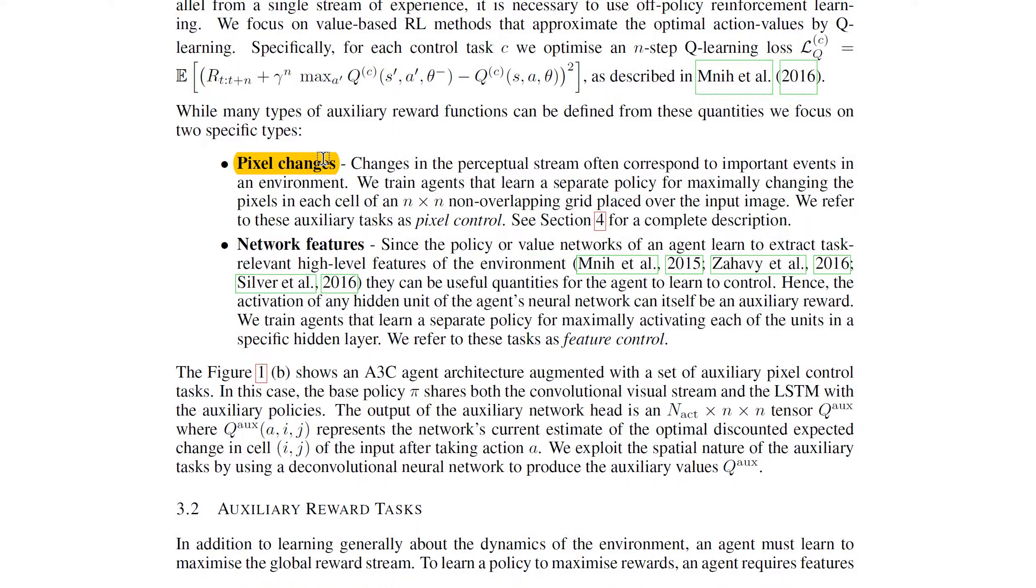This is one auxiliary task they augment the agent with. The other one is network features - it's kind of meta-learning. You actually reward the agent for changing its own internal activations. The hope is that it learns something about itself. How can I activate my internal neural network units? It gets rewarded for that. This kind of self-introspection, you hope, leads to a network that does more sophisticated tasks.